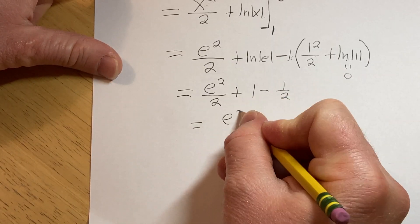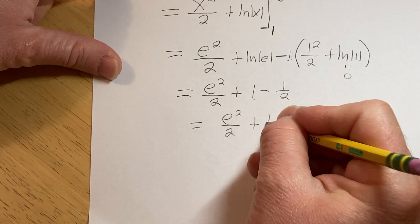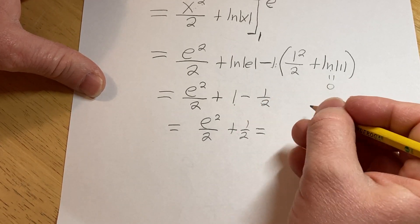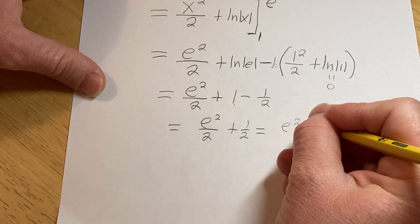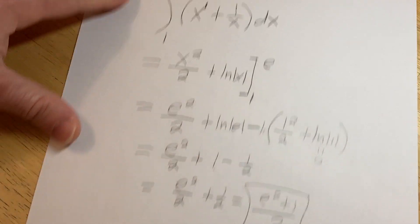So this is simply going to be e squared over 2. 1 minus 1 half is 1 half, so plus 1 half. If we want to be fancy, we can write it all over the number 2, so we can write this as e squared plus 1 over 2. And that would be the value of this definite integral.